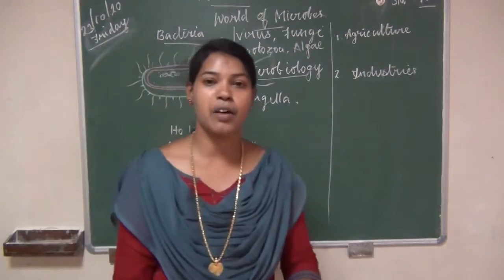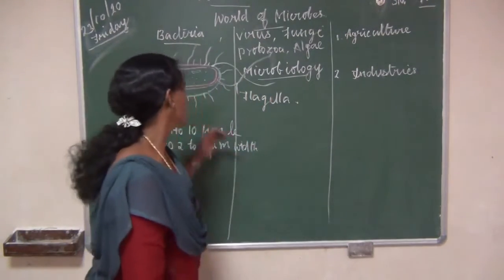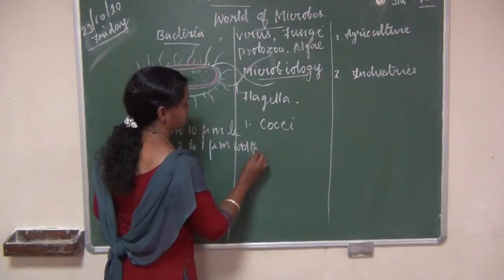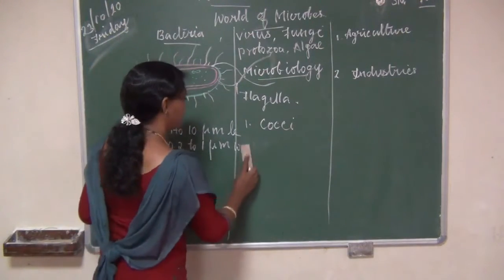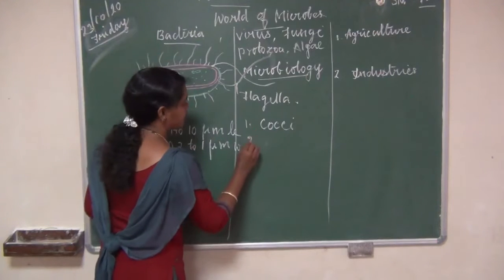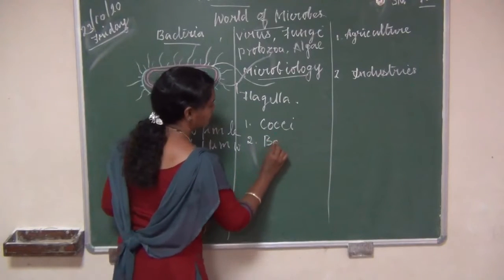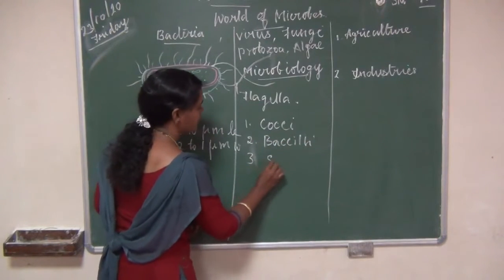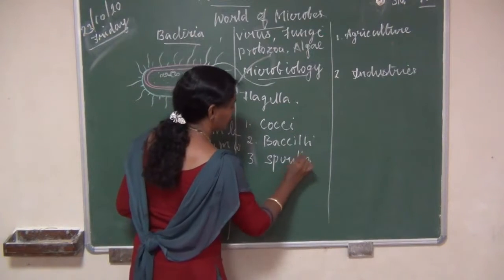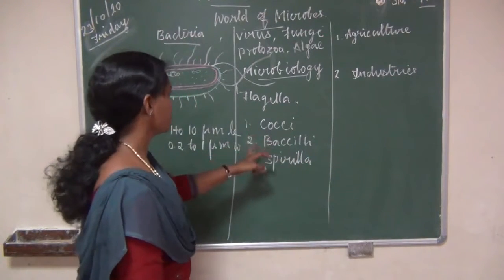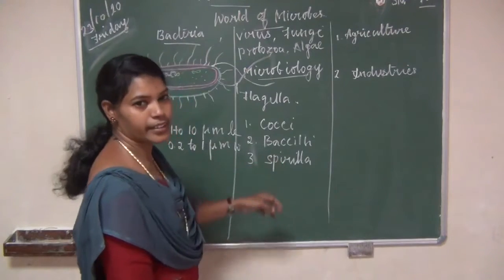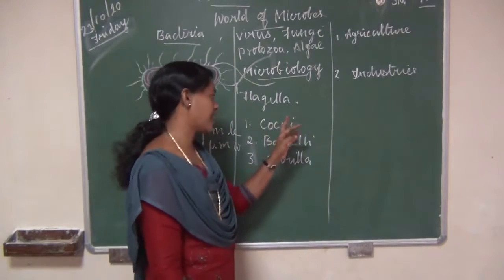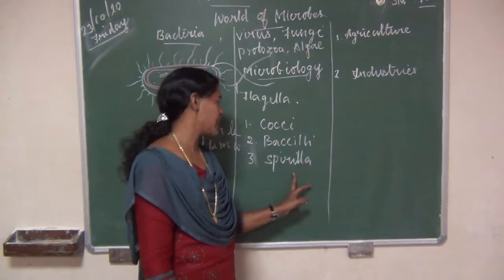Now we can see the shapes of bacteria. Based on shapes, bacteria are classified into three types: coccus, bacillus, and spirilla.